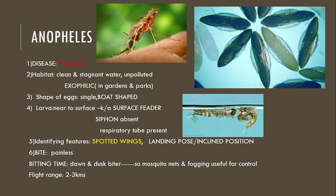First we will learn the individual species of mosquitoes then compare between them. Whenever you are learning individual species, study in a sequential manner so that you will not miss any important features of each mosquito. Learn in this order: the disease it causes, the habitat it lives in, the shape of eggs, the characteristics of larva, identifying features of the individual mosquito, the bite and biting time, and the flight range.